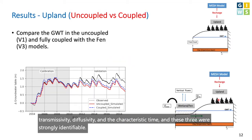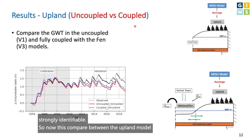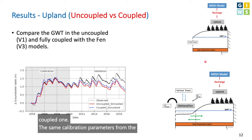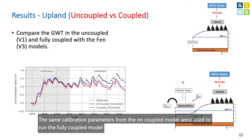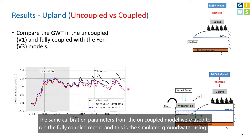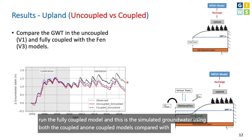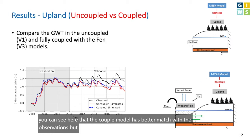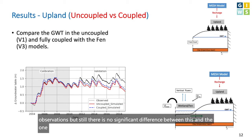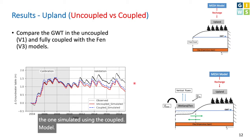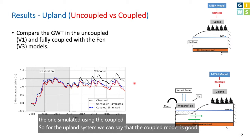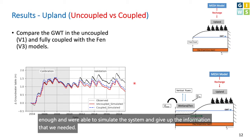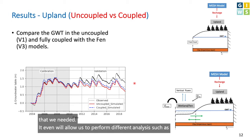Comparing the uncoupled and coupled upland models: the same calibration parameters from the uncoupled model were used to run the fully coupled model. The coupled model shows a slightly better match with observations, but there is no significant difference between the two. For the upland system, the uncoupled model is good enough to simulate the system and provide the information needed. It also allows us to perform calibration, validation, uncertainty analysis, and identifiability analysis.